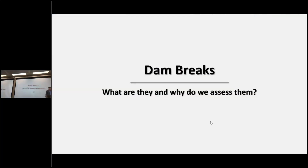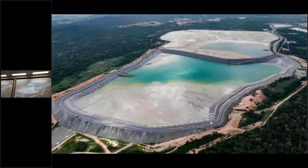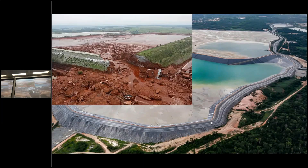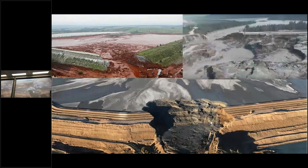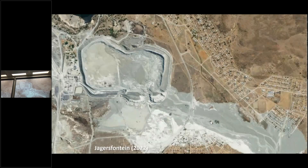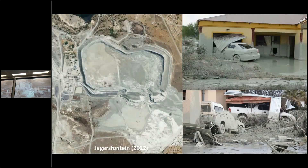First off, dam breaks — what are they, why do we do them, what's the big issue? Well, as pretty much everyone in this room knows, a big byproduct of the mining industry is tailings. This is a contaminated waste product which you don't want touching the environment, and you normally store it in a TSF, or tailings storage facility. But what happens if the dam breaks? You can get some pretty disastrous consequences — economic, environmental, and sadly, a lot of these also lead to a loss of life. A big dam break failure that happened in recent times was Jagersfontein in 2022, and these aren't isolated incidents because in 2022 alone there were six dam break failures.